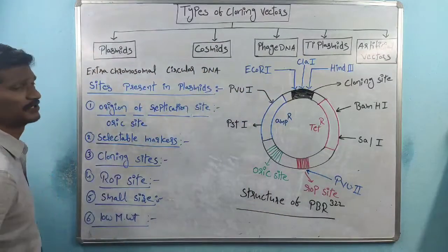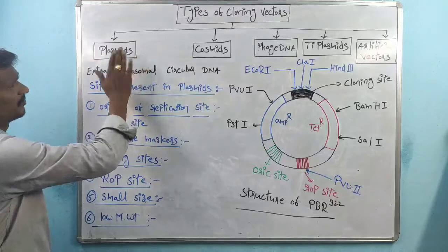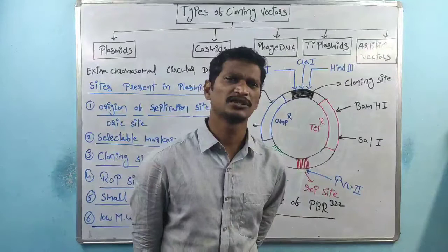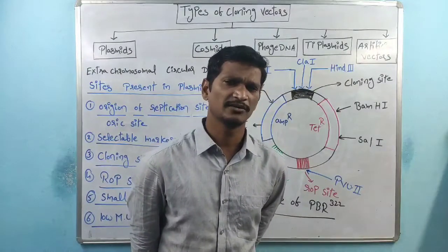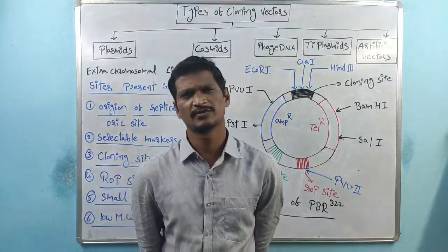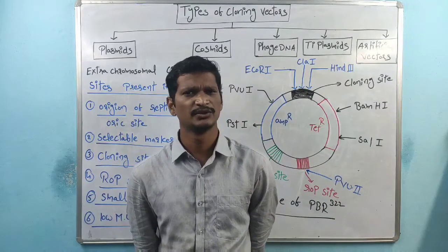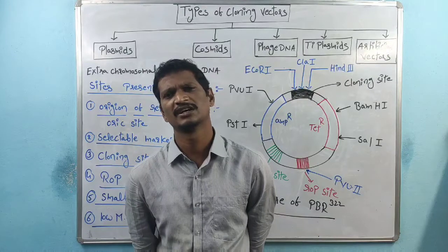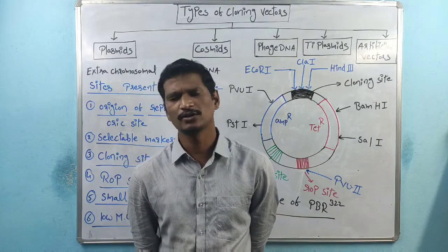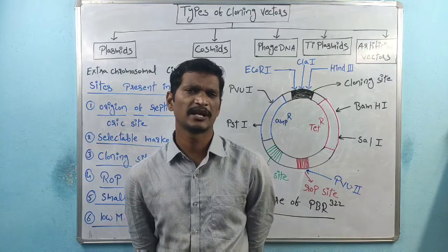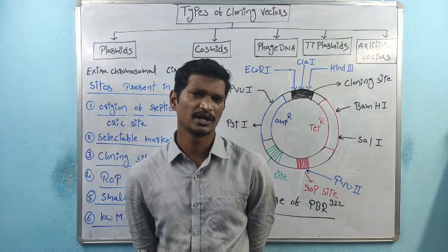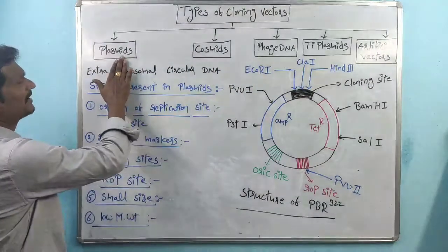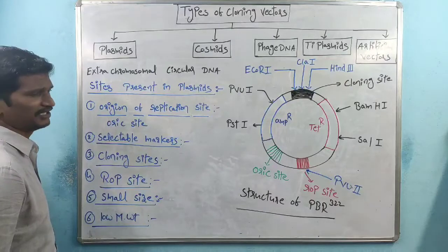The very first type of vectors are plasmids. Plasmids are extra-chromosomal, circular, double-stranded DNAs which are present in the cytoplasm of bacteria especially. Eukaryotic plasmids are also there — present in mitochondria and chloroplasts. Here we are discussing about the bacterial plasmids.